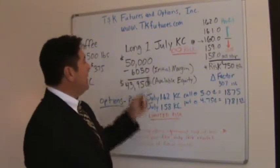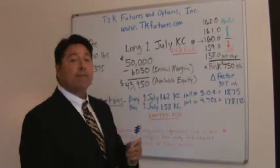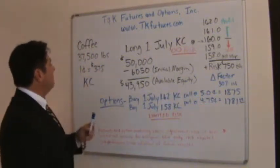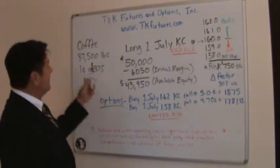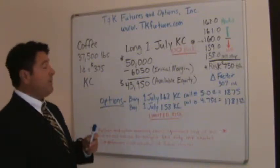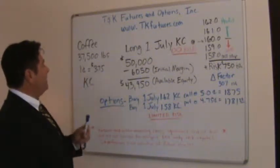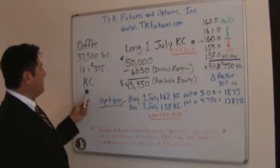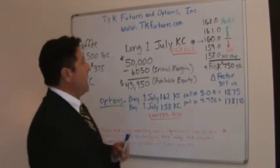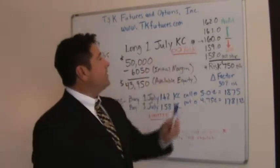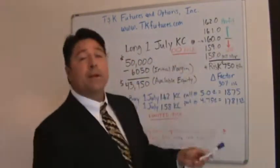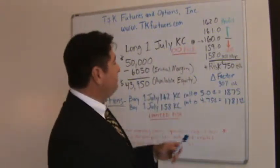I'm going to show you how to get long one July coffee futures, for instance. Let's talk about the contract specs first. Coffee is a 37,500-pound contract. Every penny move is equal to $375, and its symbol is KC. Let's say you got long this July coffee — one July coffee. These are hypothetical numbers by the way; it's all made up.